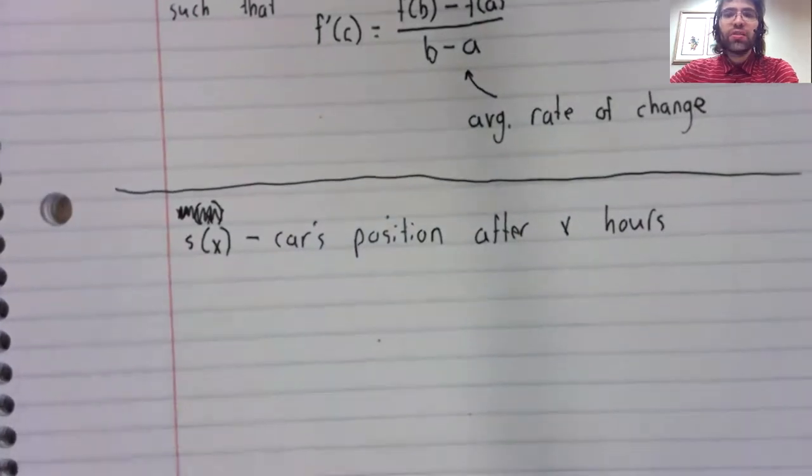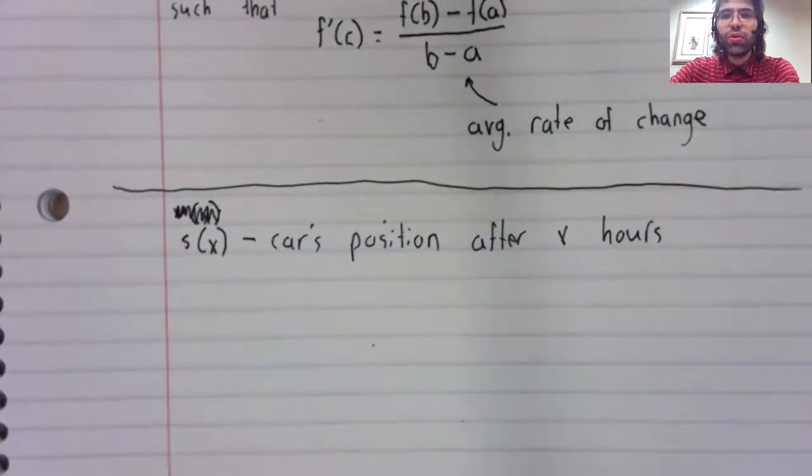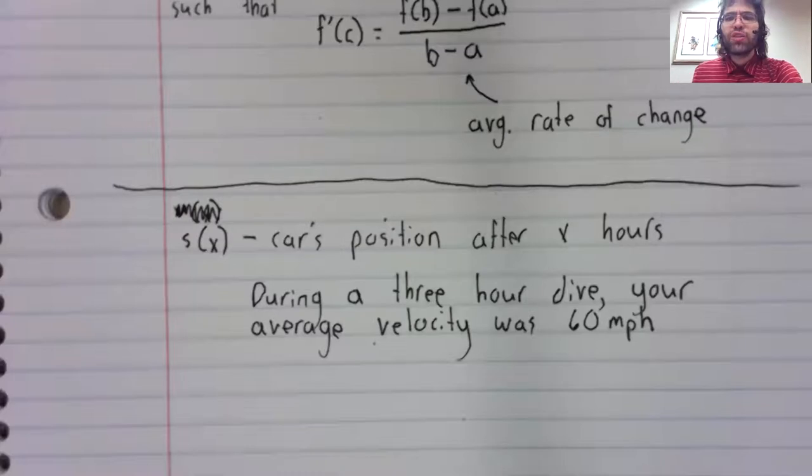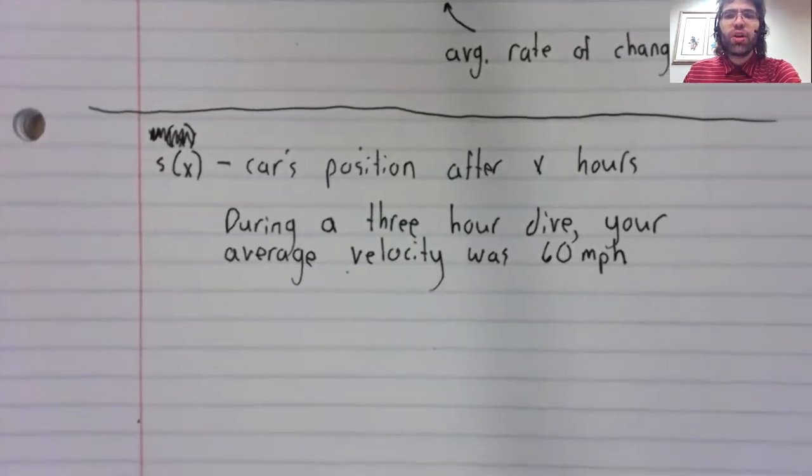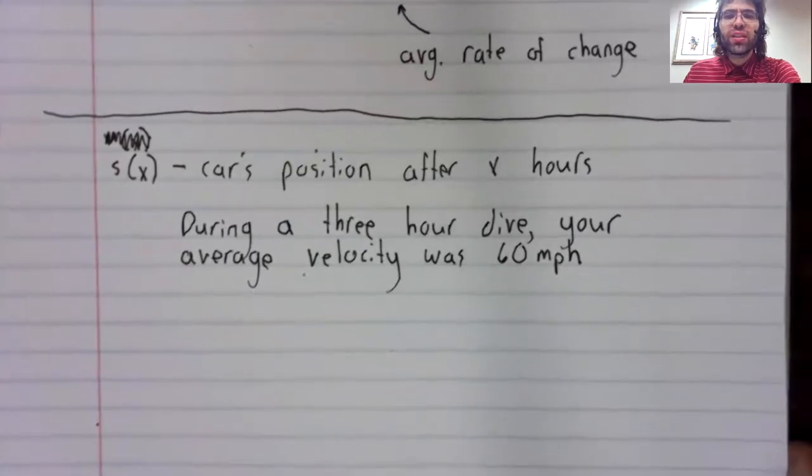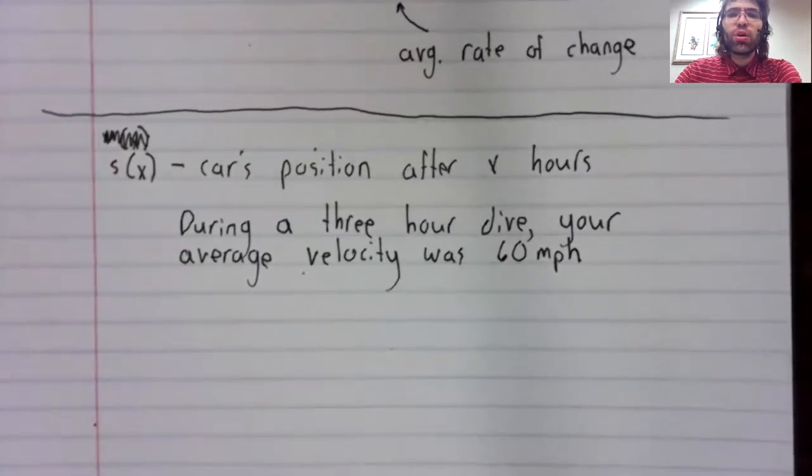And let's say we tell you that during a three hour drive, your average velocity was 60 miles per hour.